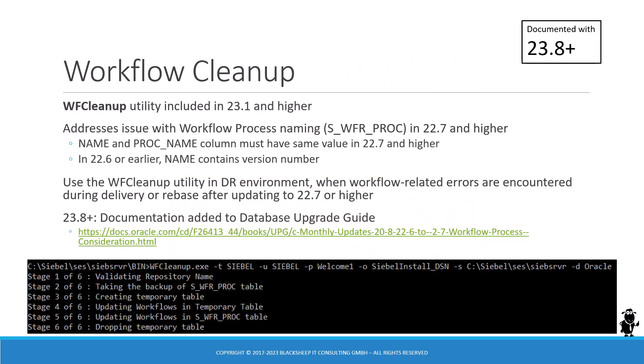The workflow cleanup utility is not actually new — it was introduced in 23.1, so it's present in any of those versions. It addresses an issue that arises from the change in the workflow process naming convention that happened in 22.7 and subsequently higher versions. Remember, 22.7 was the version when workflows became fully workspace managed. As of 22.7 and higher, the two columns — name and process name (PROC_NAME) — in the design repository table for workflows, which is S_WFR_PROC, those two columns must have the same value, which could be different if you come from an earlier version.